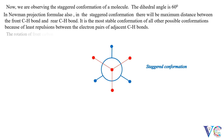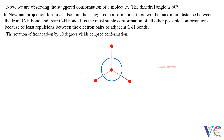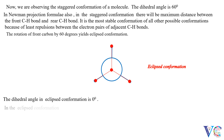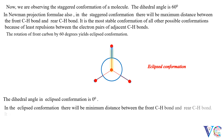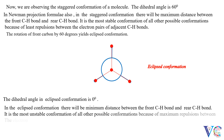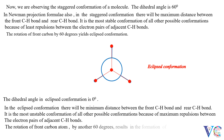The rotation of the front carbon atom by 60 degrees yields eclipsed conformation. The dihedral angle in eclipsed conformation is 0 degrees. In the eclipsed conformation, there will be minimum distance between the front C-H bond and the rear C-H bond. It is the most unstable conformation because of the maximum repulsions between the electron pairs of adjacent C-H bonds. The rotation of the front carbon atom by another 60 degrees results in the formation of staggered conformation.